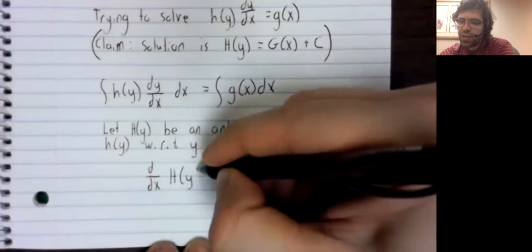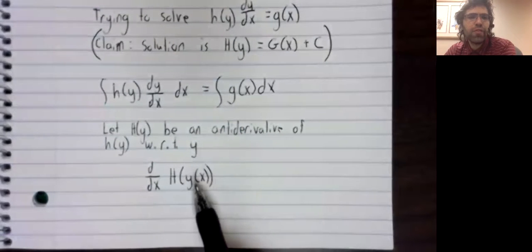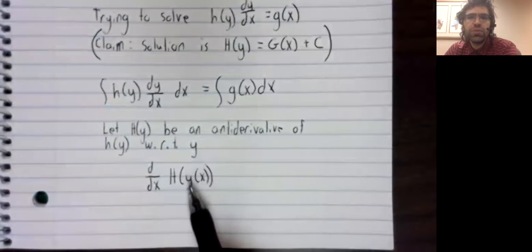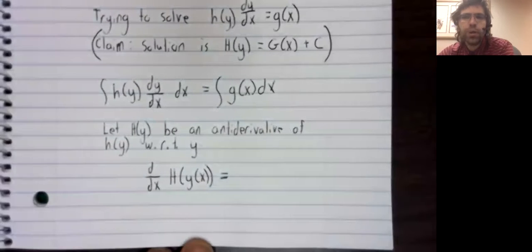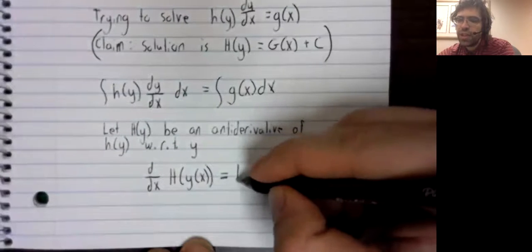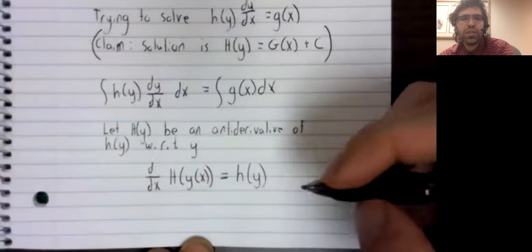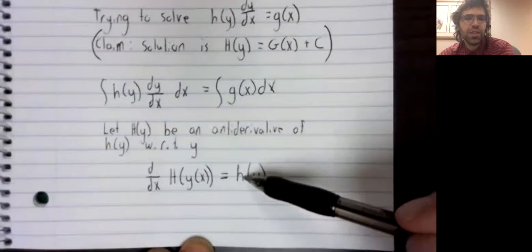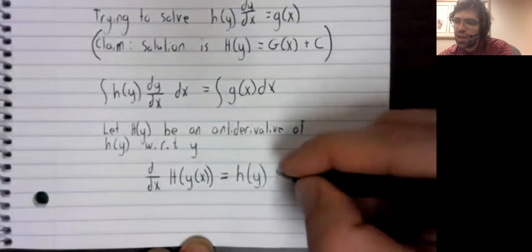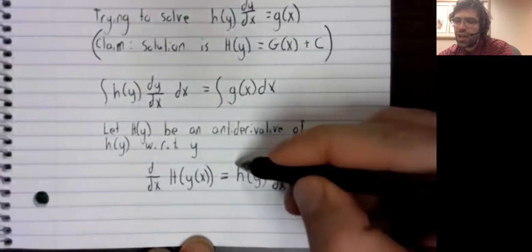Remember when we take this derivative, that y is itself a function of x. We don't usually use this function notation, but I'll write it here to really drive that point home. Because now we're using the chain rule. We take the derivative of the outside function with the inside function stuck inside of it. This is an anti-derivative, so the derivative of capital H is lowercase h. The inside function is stuck inside it, times the derivative of the inside function.